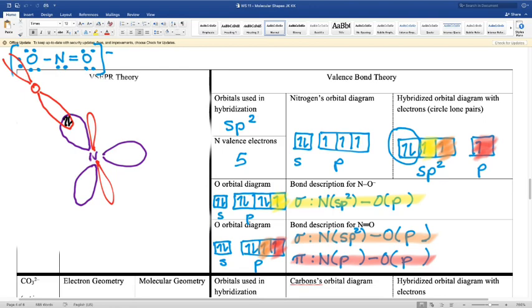It's going to overlap one of its p orbitals with the hybrid orbital on the nitrogen. And this is that yellow bond. So sp2 on the nitrogen and the p on the oxygen. And then I've got another oxygen. It's got two p orbitals.